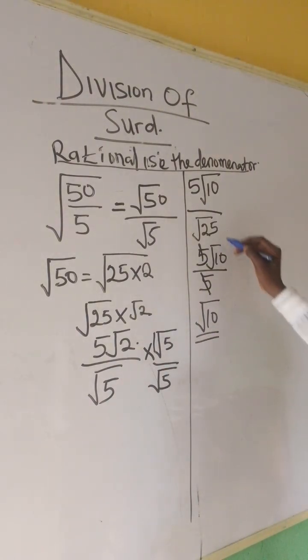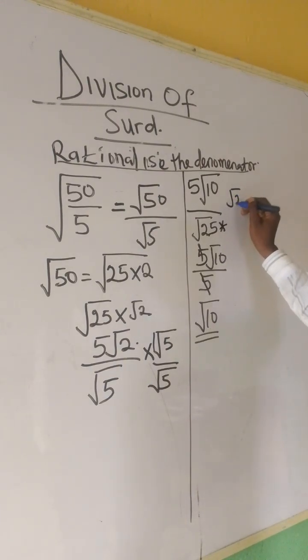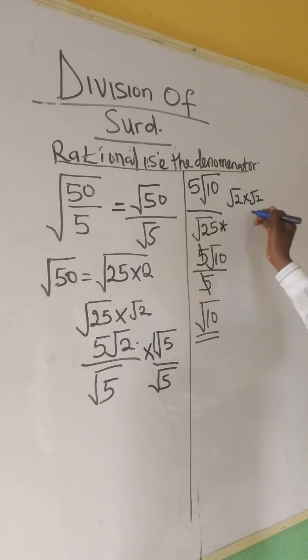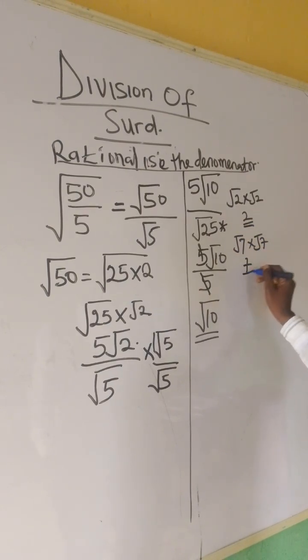Now, sometimes, we don't need this step. When you have 2 equal roots multiplying each other, like you have root 2 times root 2, you should know that your answer is 2. If you have root 7 times root 7, the answer is 7.